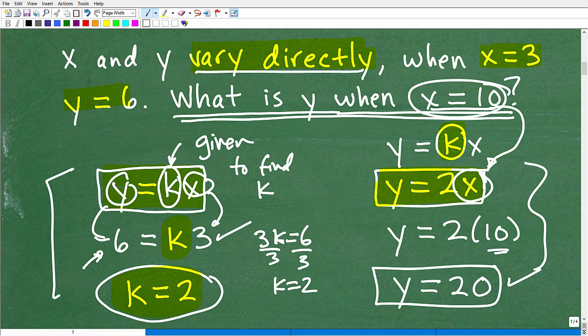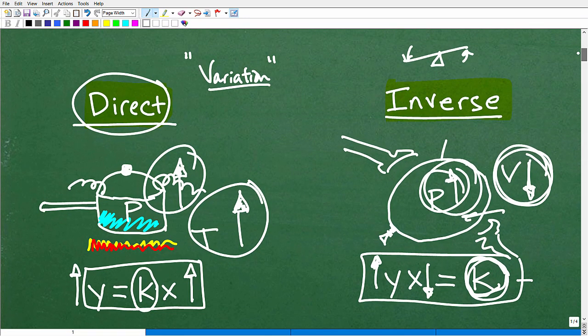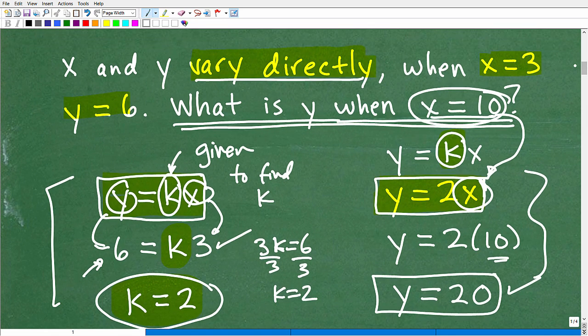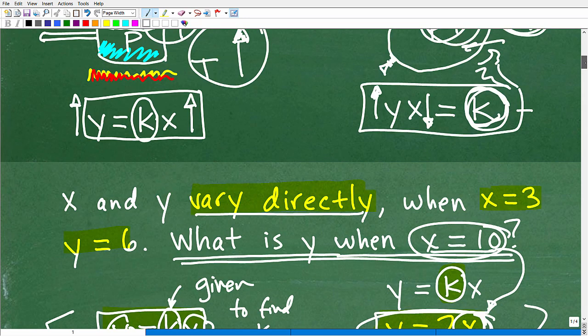So you have to learn how to, one, know what variation is, know the difference between direct and inverse variation, especially when we're talking about word problems. And then understand that most of these problems, there's going to be given information in the problem such that you can be able to solve for k. Sometimes they'll give you the constant variation, but more often than not, you'll have to solve for it. Then you can rewrite the equation and then answer the question that you're looking to answer.